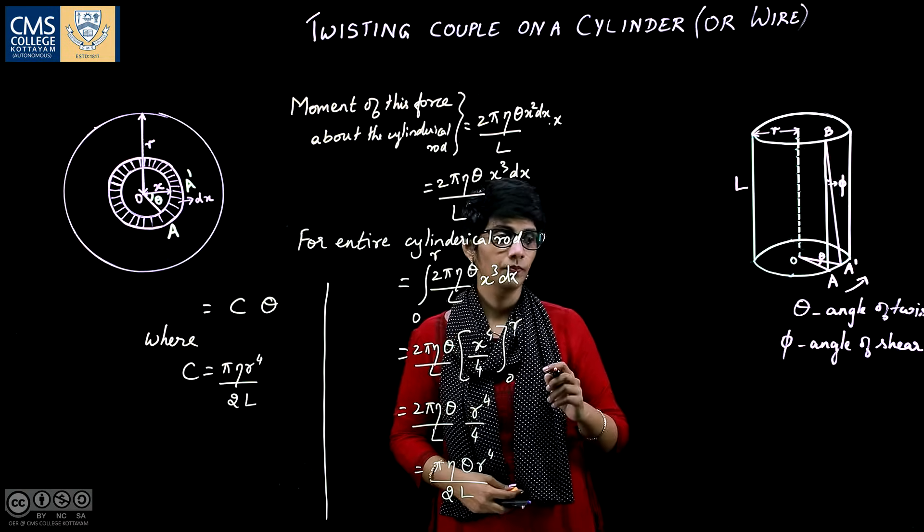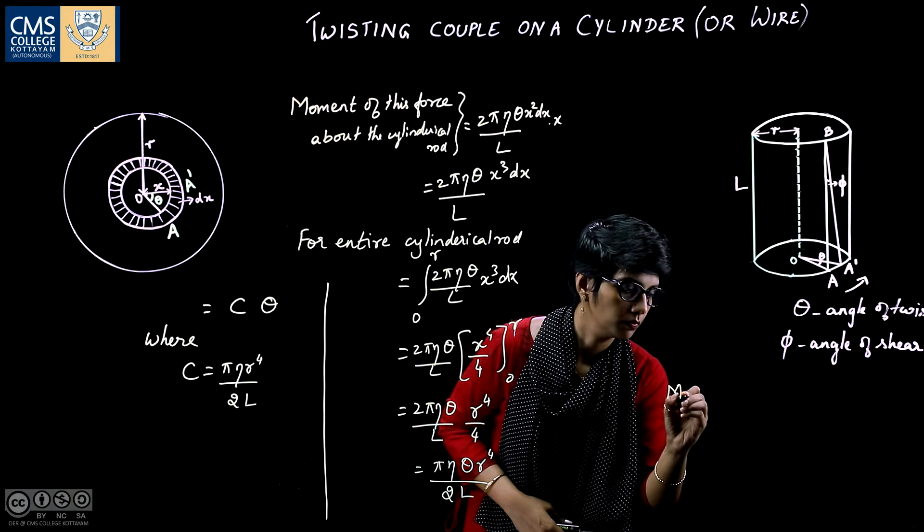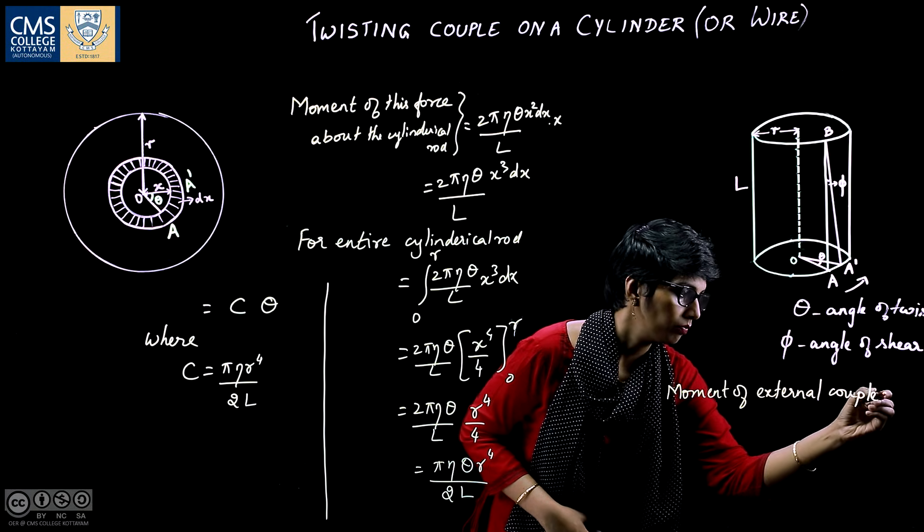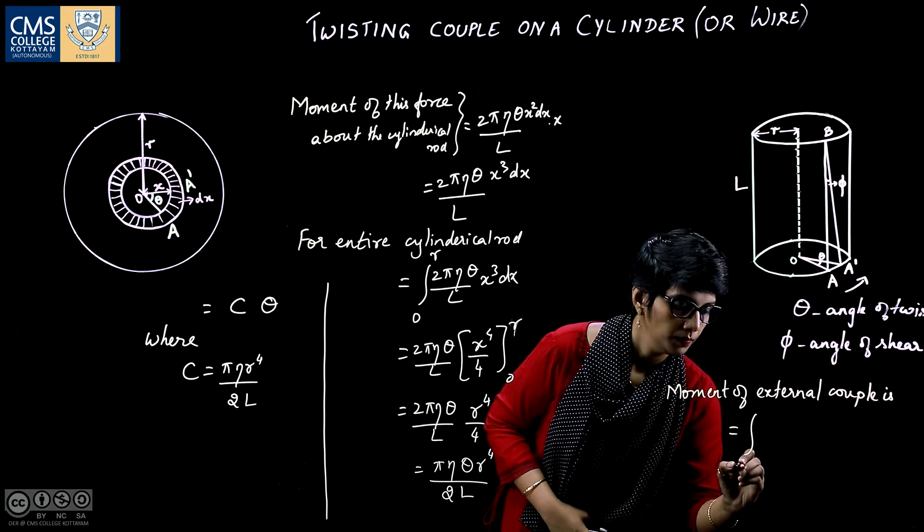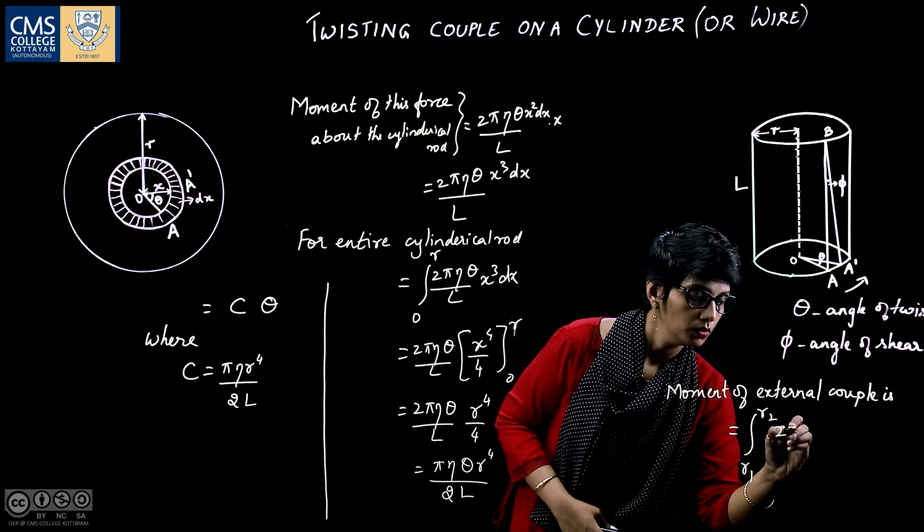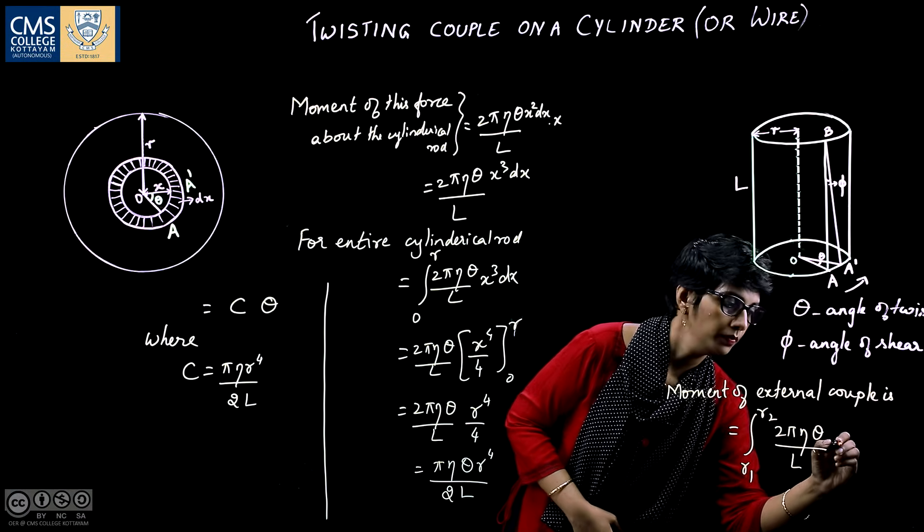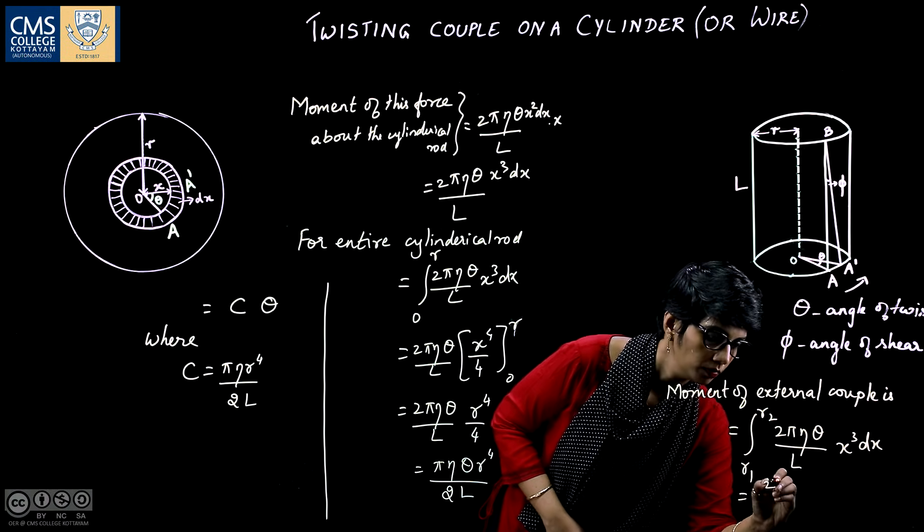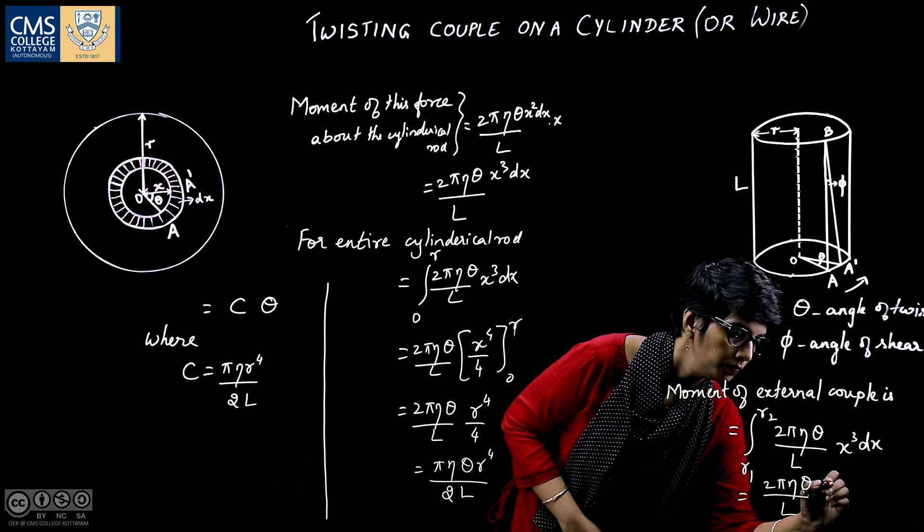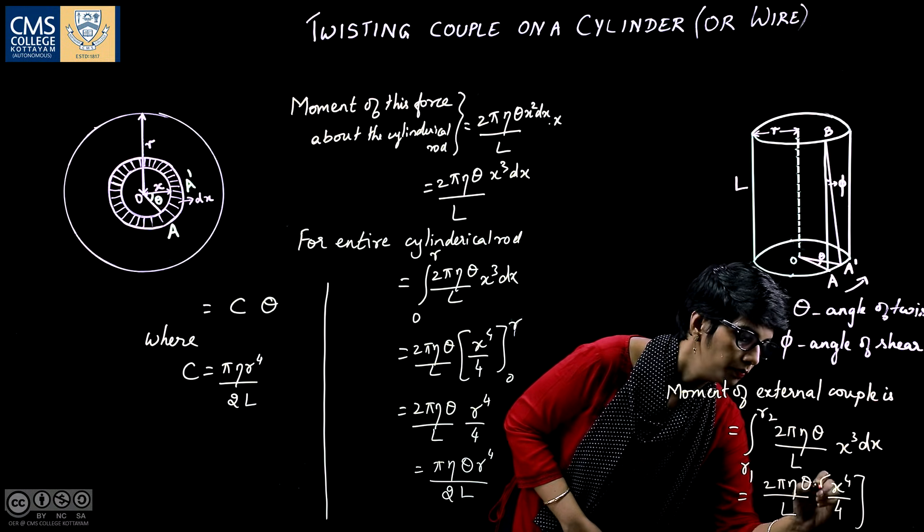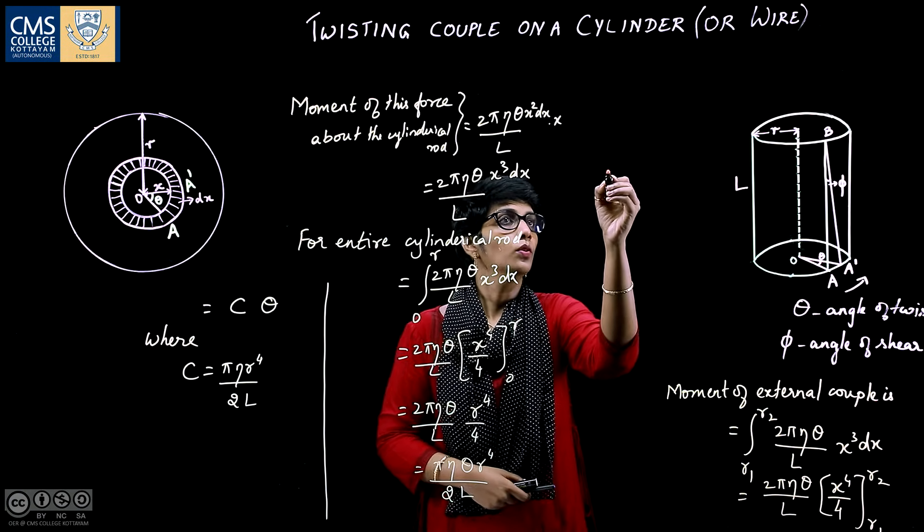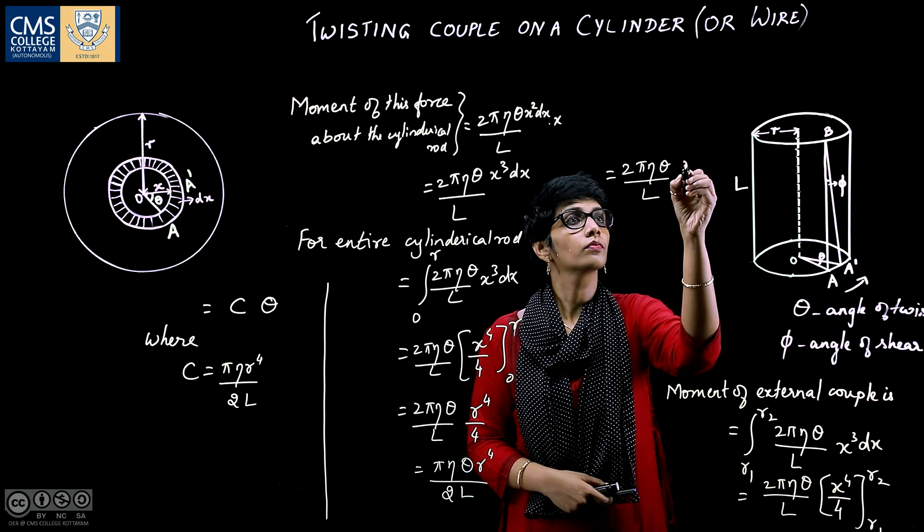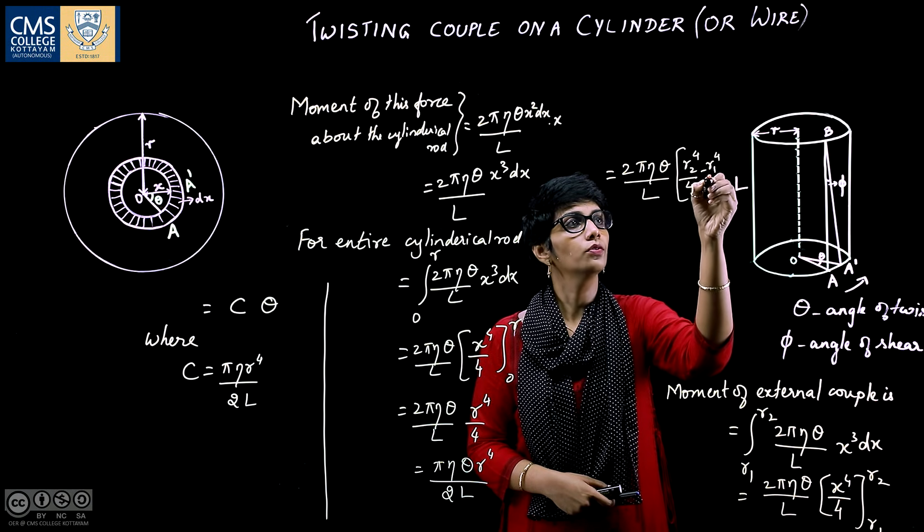Then the moment of external couple is integral r1 to r2 of 2 pi eta theta by L x cubed dx. This is equal to 2 pi eta theta by L, x raised to 4 by 4, r1 to r2, which is equal to 2 pi eta theta by L into r2 raised to 4 by 4 minus r1 raised to 4 by 4.